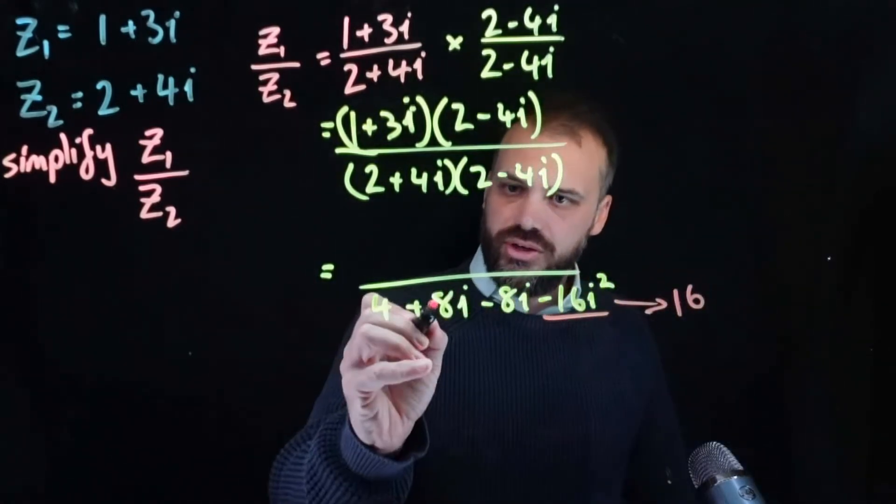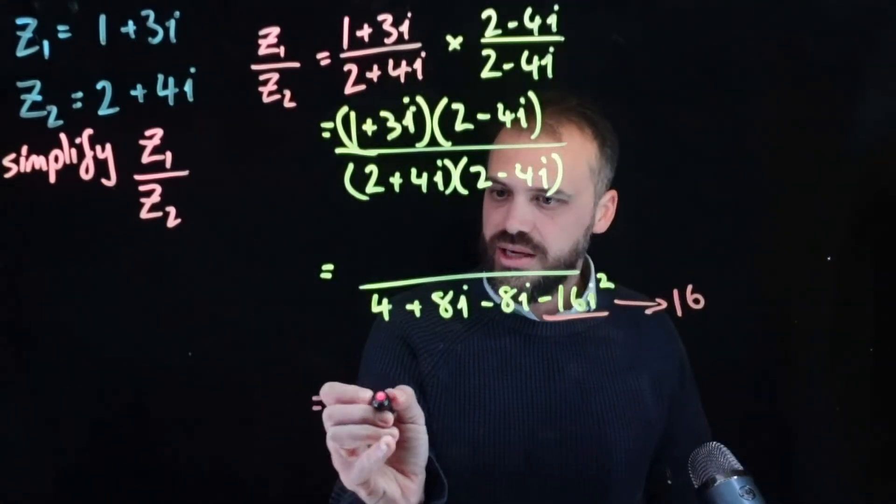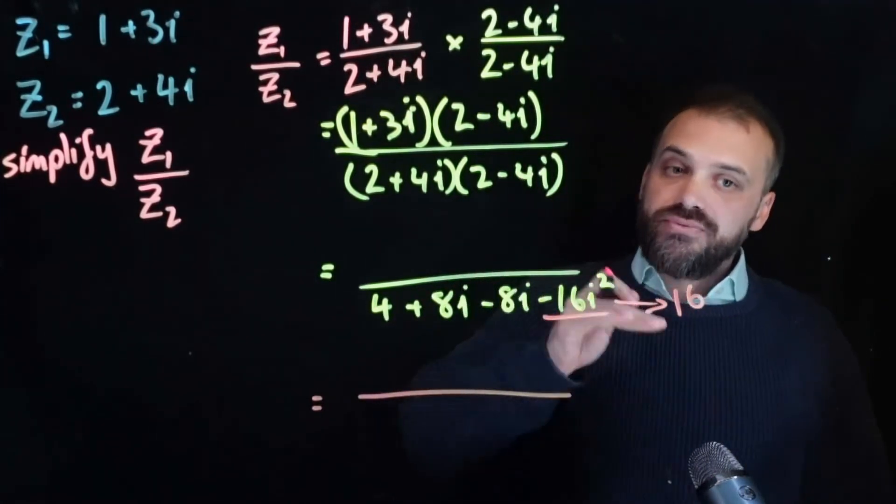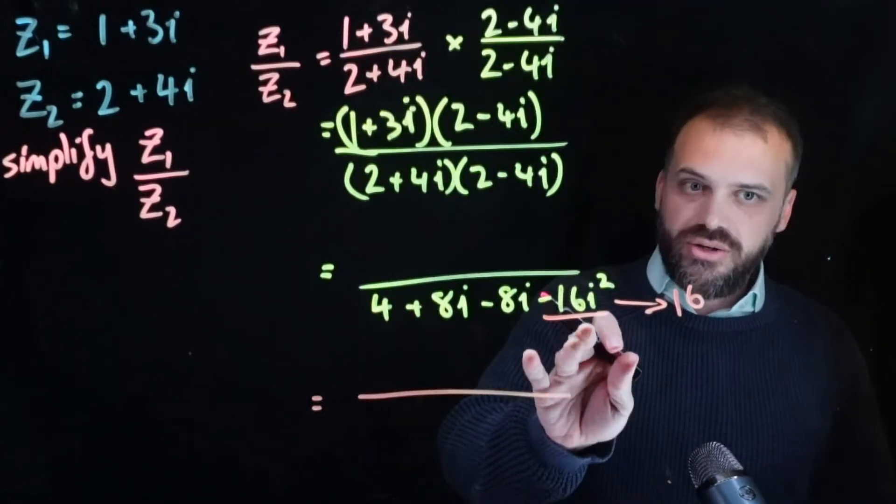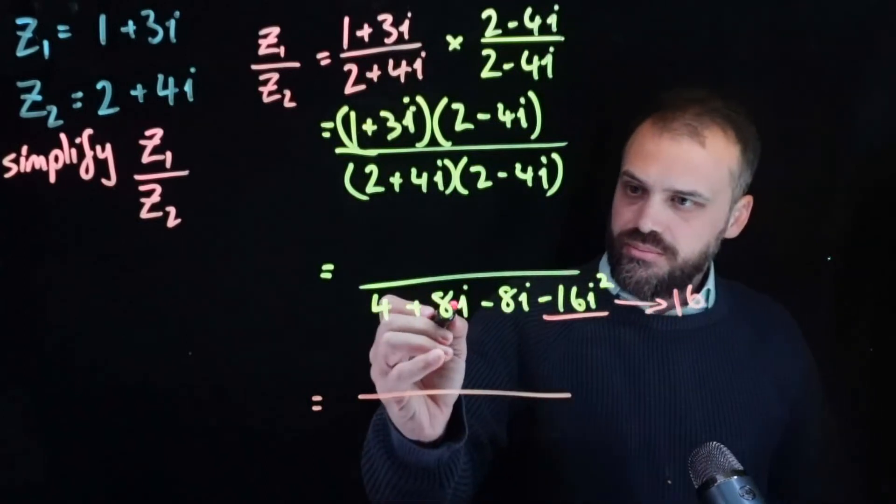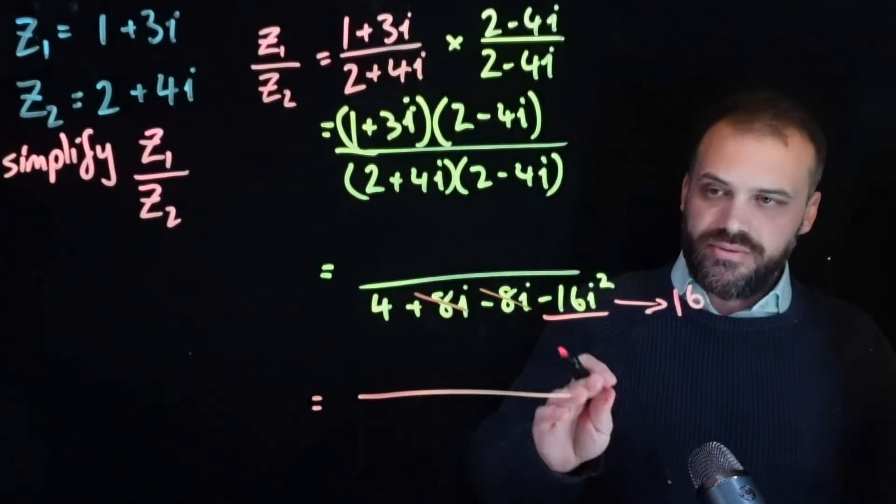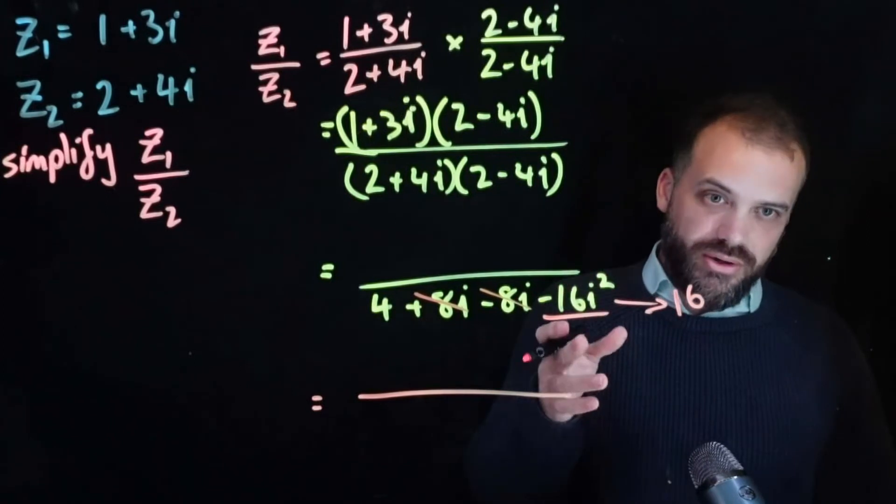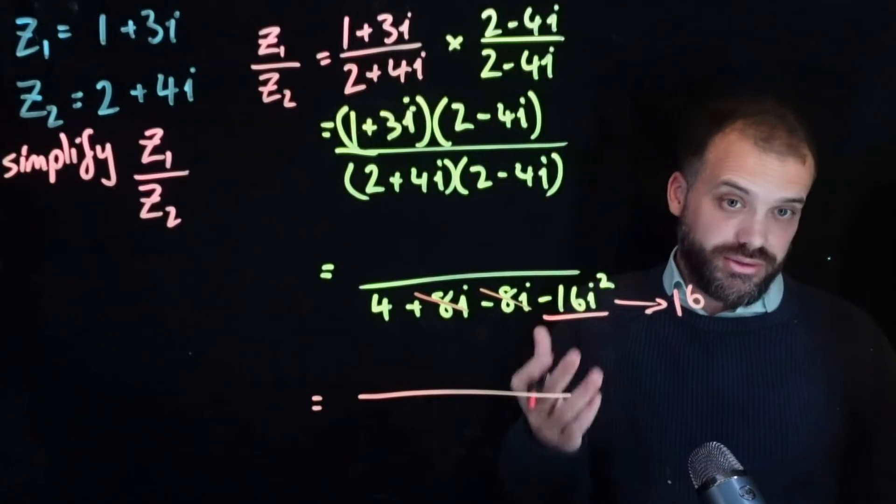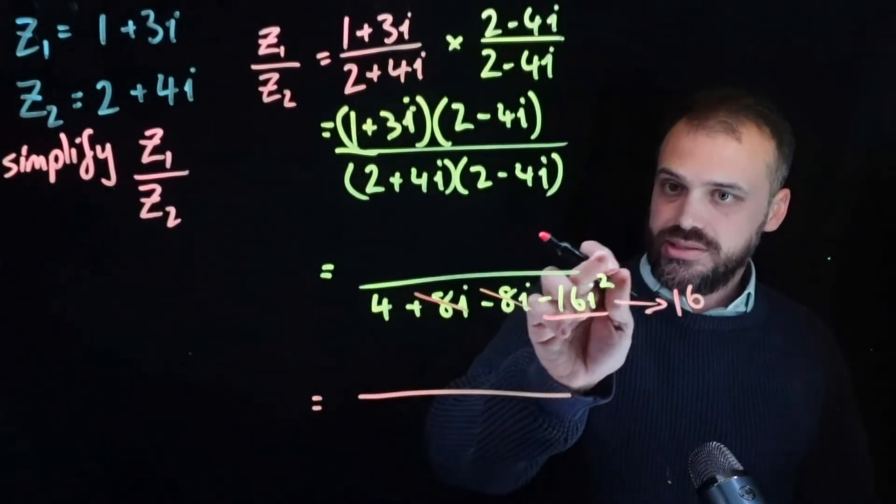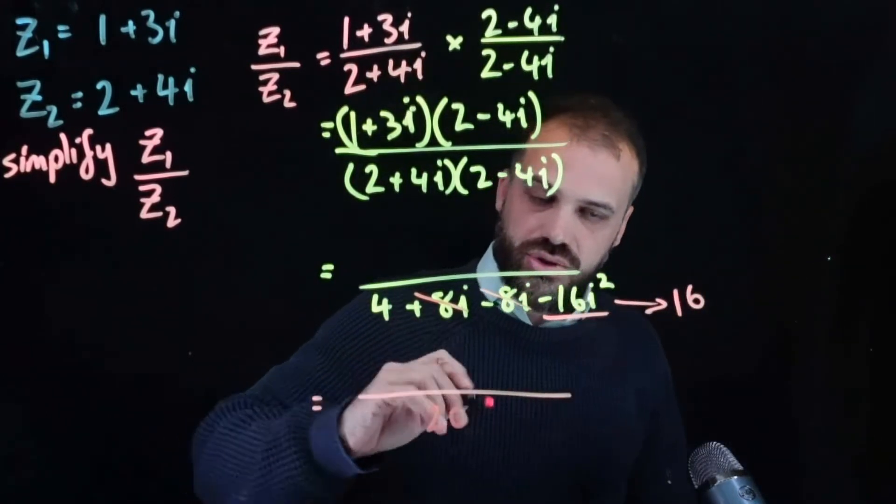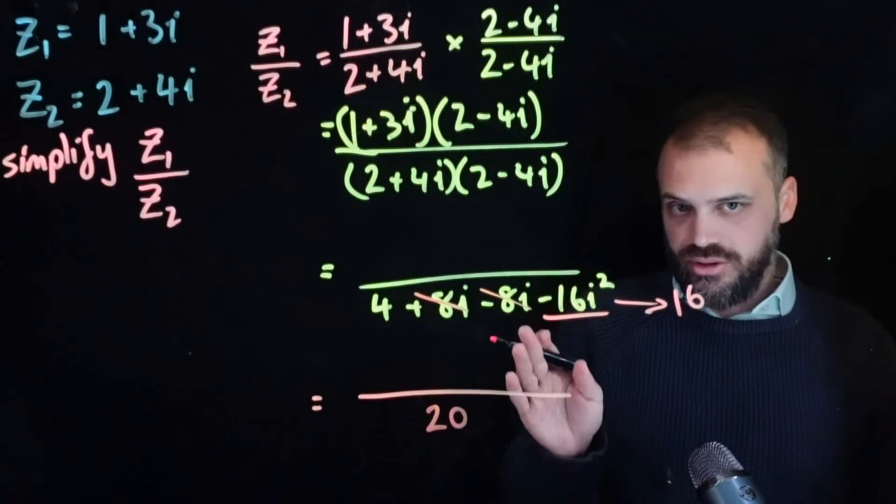Alright, so I'm just going to do the next line without even thinking about the numerator, because this is the important part. If you have done this correctly, the denominator will always be a purely real number, because these will always cancel each other out. And this, because we're squaring the i, ends up being a positive real number. So, 4 plus this, which is actually this, is 20. And we've got this nice 20 on the bottom here.